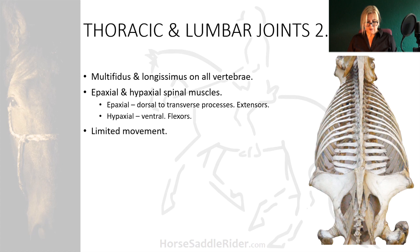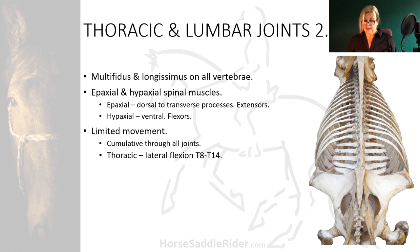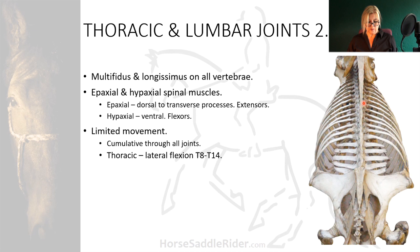Movement is limited in the back but cumulative through all joint segments along the thoracic and lumbar spine to make one gross movement. In the thoracic portion, movement is predominantly lateral flexion, although mostly between T8 and T14 — directly under where the rider sits at the base of the withers where the potential restriction of the saddle rails and stirrup bars lie.